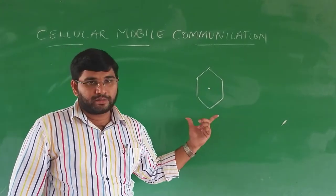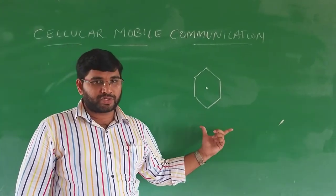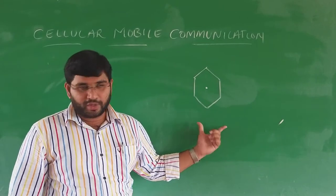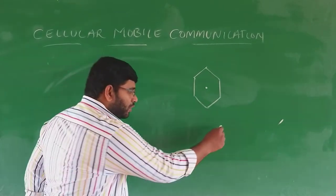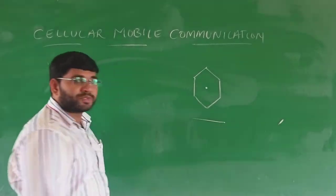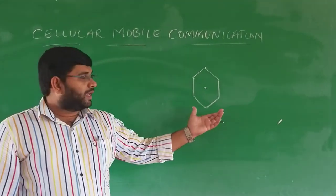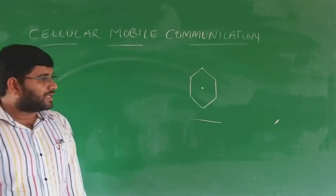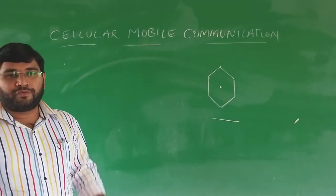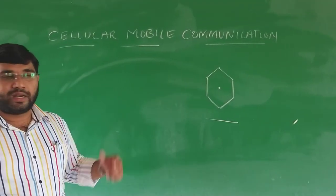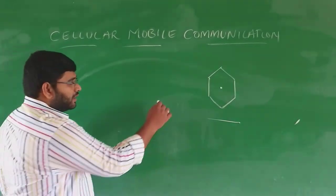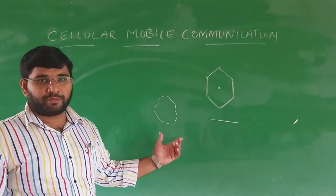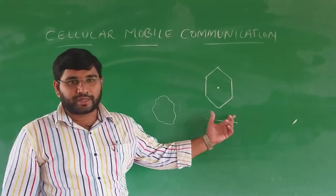Theoretically, the coverage area shape is denoted as a hexagonal shape. So the total cellular concept is based on hexagonal shape. Whereas in practice, the shape of a cell is uneven. This is the practical shape, and the hexagonal is the theoretical shape.